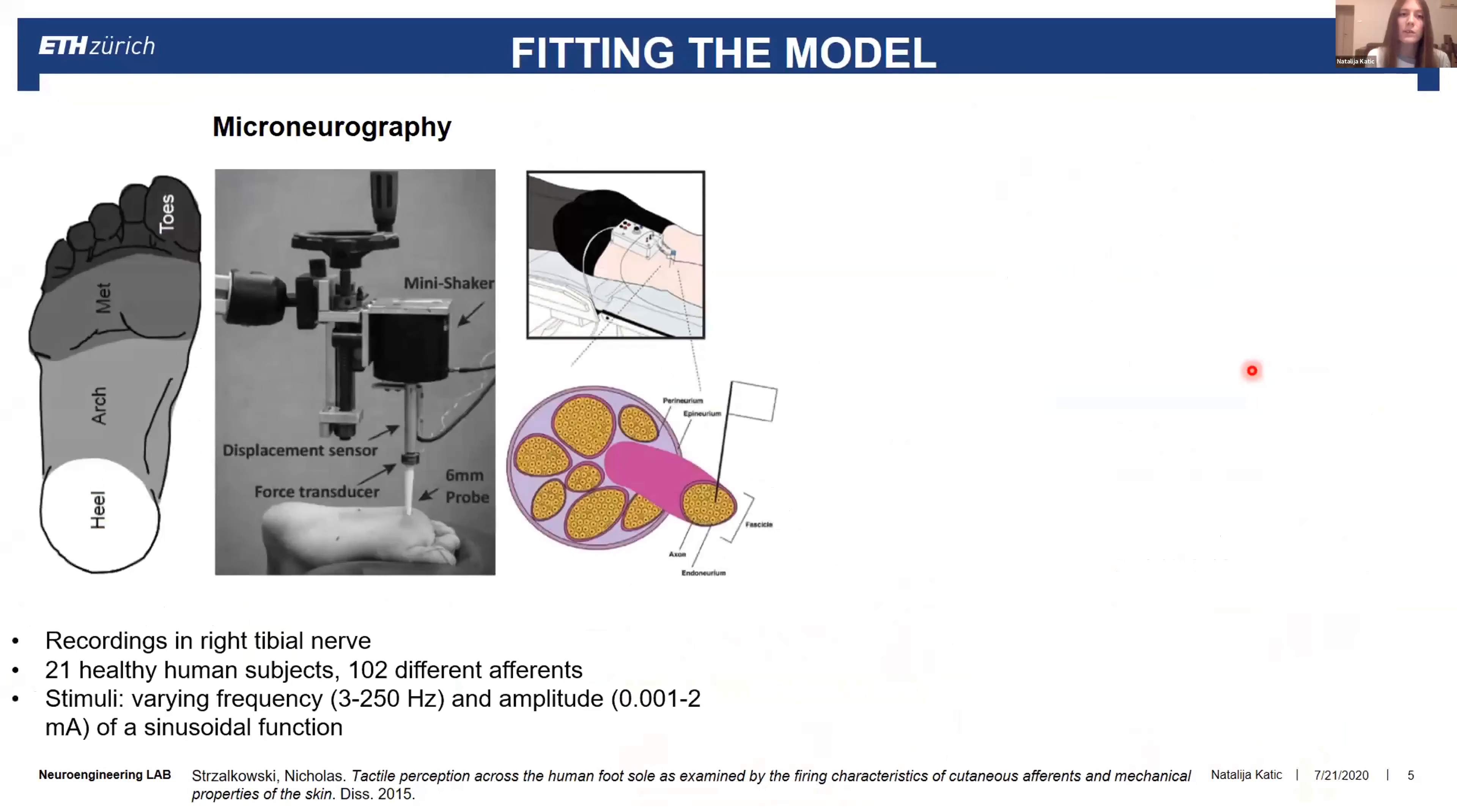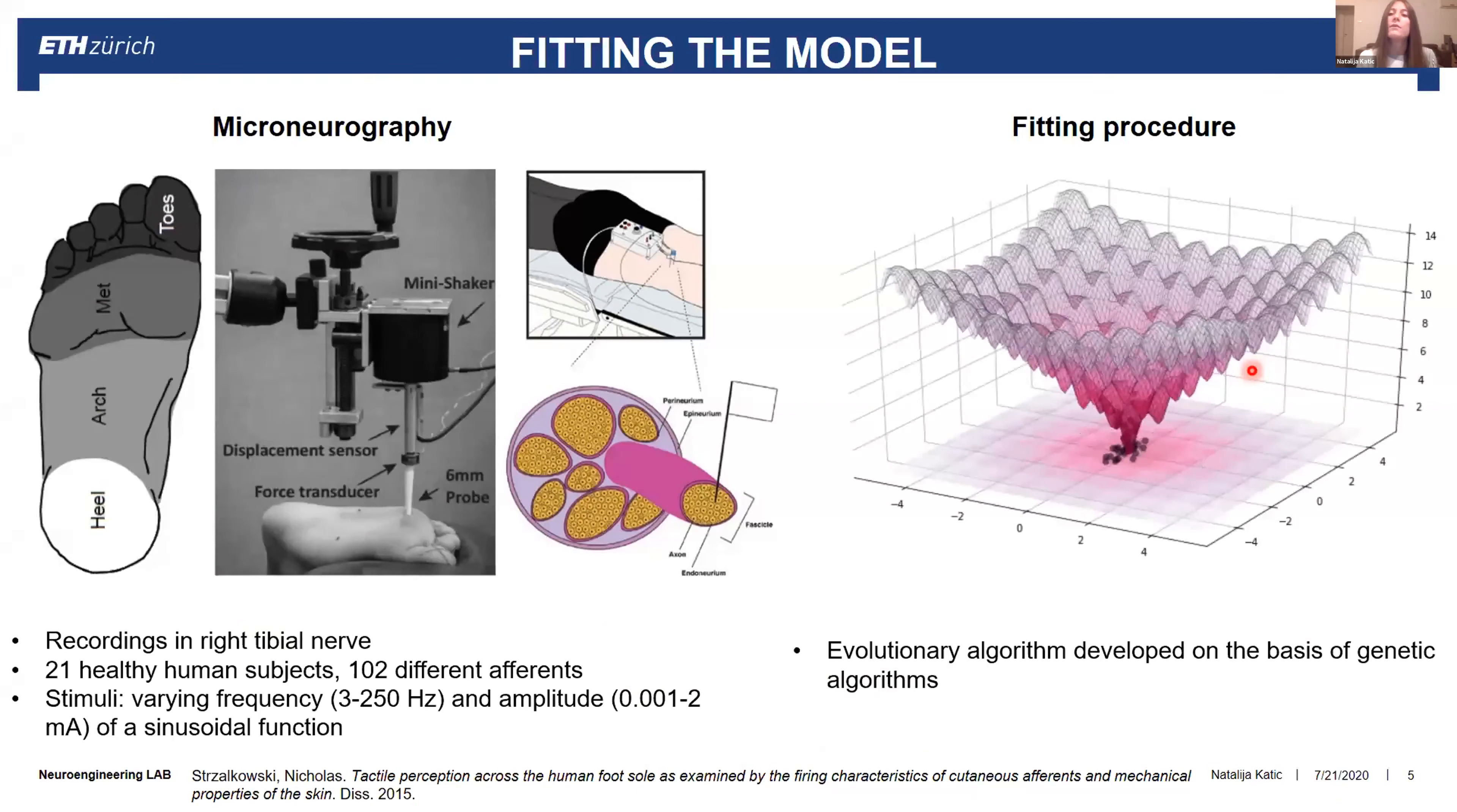We fitted our model with real microneurography data from human subjects that was recorded in the right tibial nerve with different sinusoidal stimuli with varying frequency and amplitude. We use evolutionary algorithm that is developed on the basis of genetic algorithms in order to find the minimum of the fitness function, which is in this case the minimum difference between the recorded firing rate and the simulated firing rate.